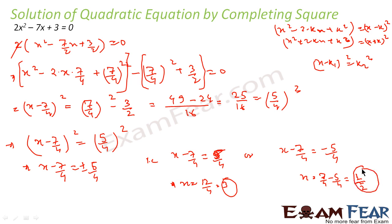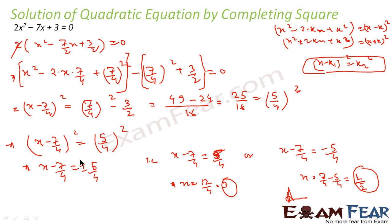So x = 3 or x = 1/2. That is the answer. I wrote the equation in the form x² - 2kx, found k = 7/4, added and subtracted (7/4)², and got (x - 7/4)² = (5/4)². Then x - 7/4 = ±5/4, giving two values of x.